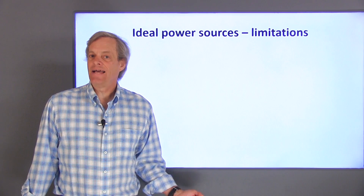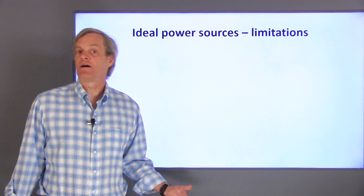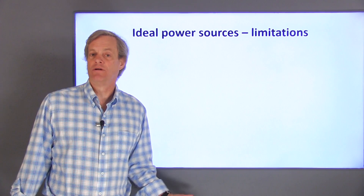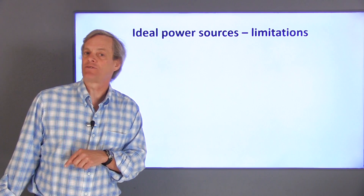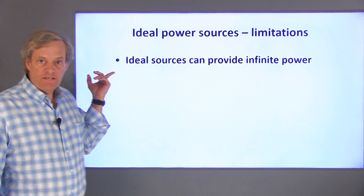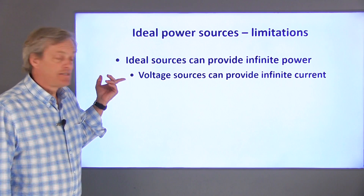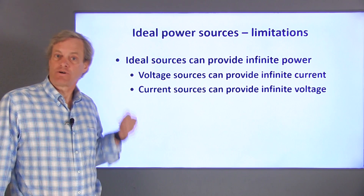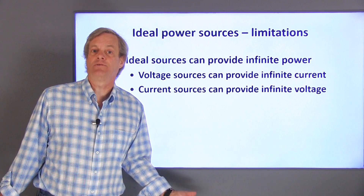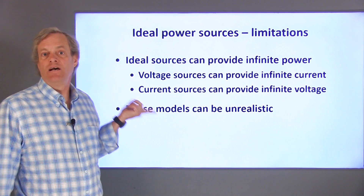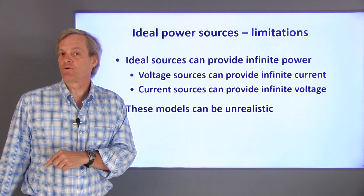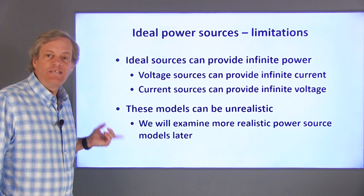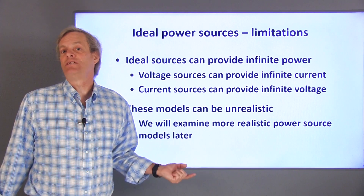It's important to remember that the ideal independent sources in this video are only mathematical models that approximate the behavior of actual sources. A model of a circuit element will have limitations that make it behave differently from a real element. Our goal when modeling a circuit is to choose the simplest model that adequately describes the behavior of the real element. One obvious problem with ideal sources is that they can deliver infinite power. Since an ideal voltage source can provide any current, the current can be infinite, which is impossible for a real device. Likewise, since an ideal current source can provide any voltage, the voltage can be infinite, which is also impossible. So depending on the circumstances, these models can be unrealistic. Therefore, the underlying assumption when using an ideal source is that its actual current or voltage will be low enough so that its behavior is close enough to ideal. There are fairly simple approaches to modeling sources that do have limited power output, and we'll see some of those later in this course.